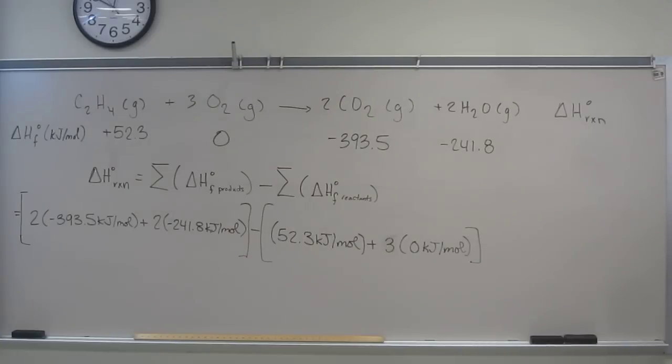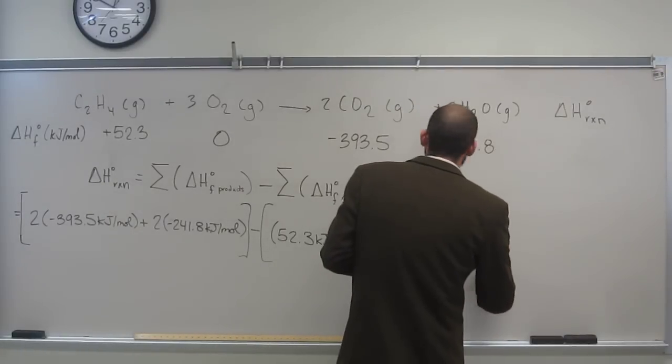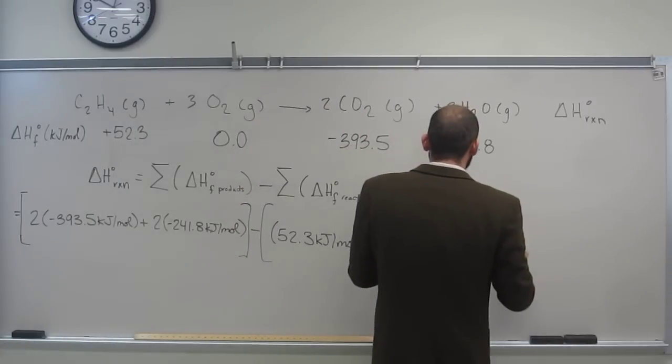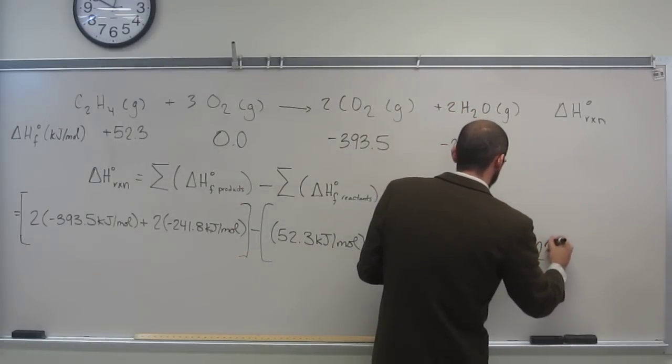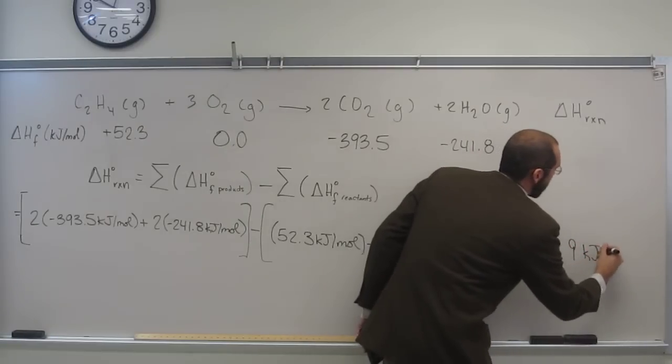So now all you do is just plug that into your calculator. This is the number I got. And hopefully everybody got the same number as me. Negative 1322.9 kilojoules per mole.